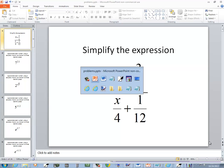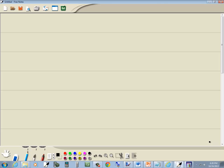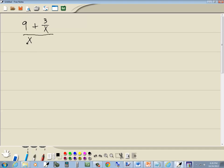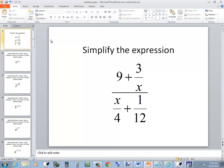Let's simplify this expression. We've got 9 plus 3 over x, all over x over 4 plus 1 over 12.